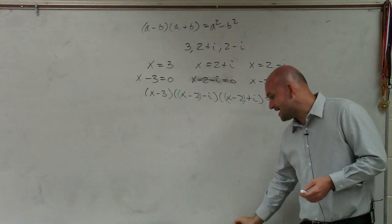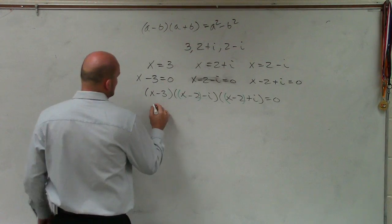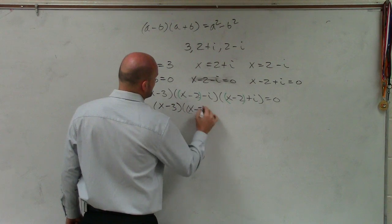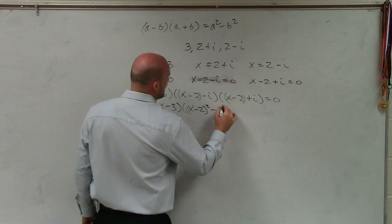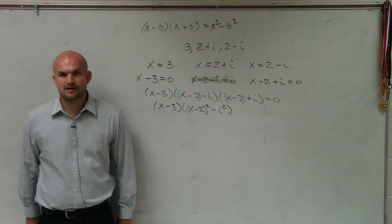So now I can just rewrite. I can actually multiply these by applying the difference of two squares. So then it'll look like (x - 3) times (x - 2) squared minus i squared. Would everybody agree? Anybody have any questions on that?